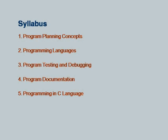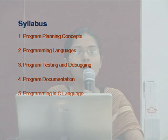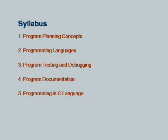The FPL syllabus is divided into five chapters. Chapter one is Program Planning Concepts, covering algorithms, flowcharts, and pseudocodes — including sequential logic, looping, and how to write algorithms and flowcharts. Chapter two is Programming Languages, covering different types like assembly languages, machine languages, and high-level languages, with an introduction to various programming languages.